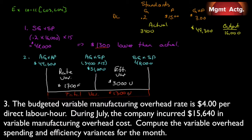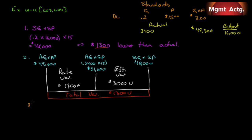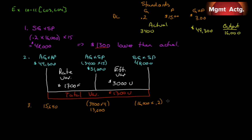Now requirement 3: the budgeted variable manufacturing overhead rate is $4 per direct labor hour. During July the company incurred $15,640 in variable manufacturing overhead cost. Compute the variable overhead spending and efficiency variances. Our actual cost was $15,640. Actual hours × standard price = 3,400 × $4 = $13,600. Standard cost = actual output × standard hours allowed × standard overhead rate = 16,000 × 0.2 × $4.